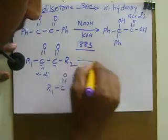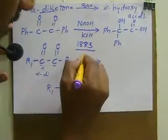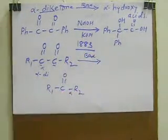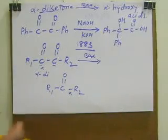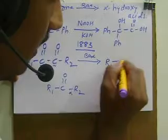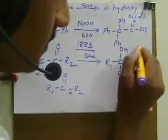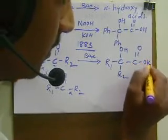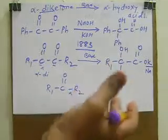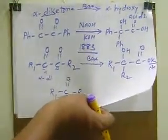When these alpha diketones undergo a rearrangement reaction in the presence of a base, they give corresponding alpha hydroxy acids or simply the salt of alpha hydroxy acids — R-C(R2)(OH)-COO-K or Na. This is the general introduction and general reaction of benzylic acid rearrangement.